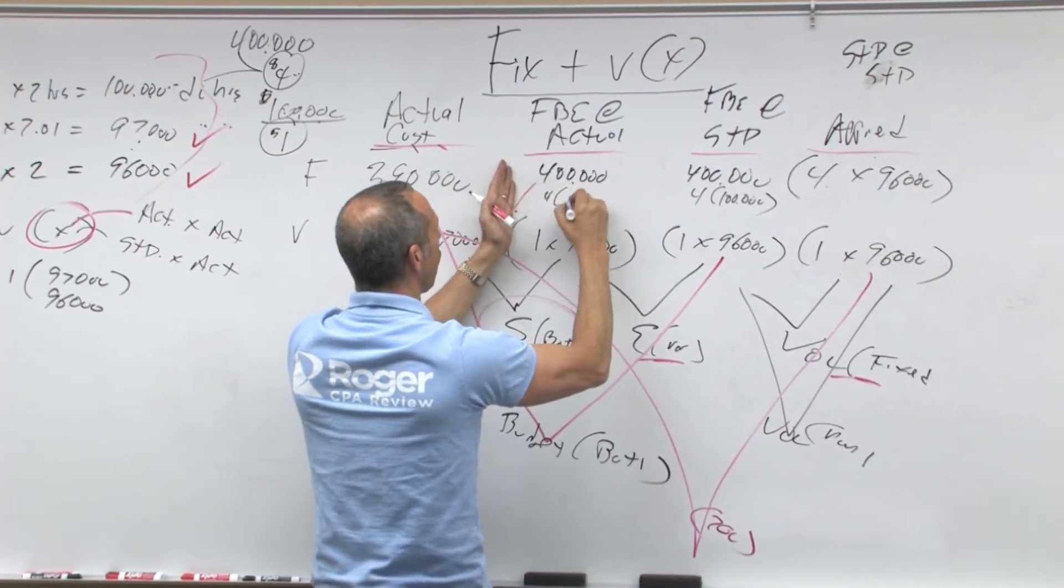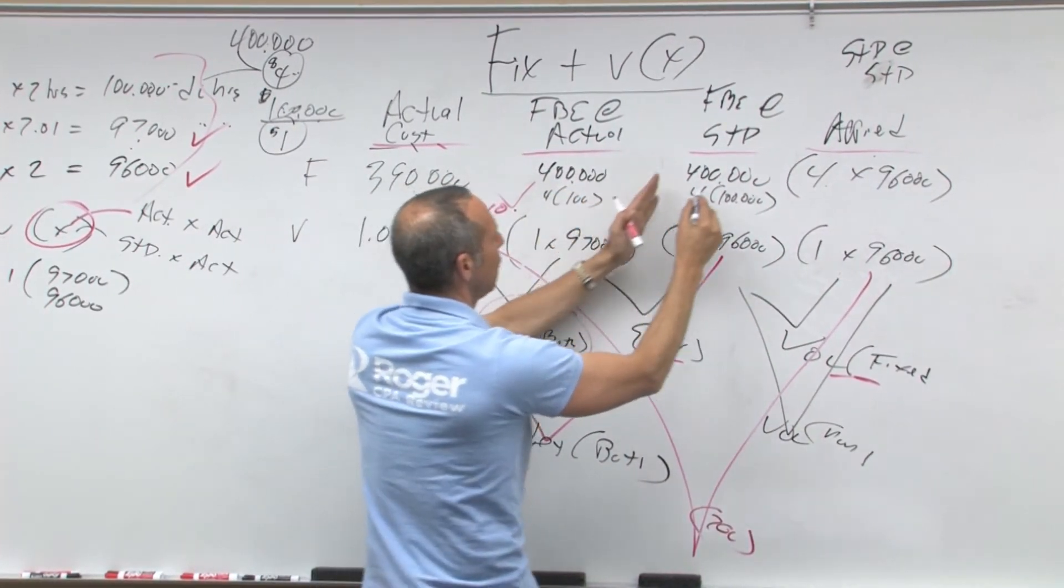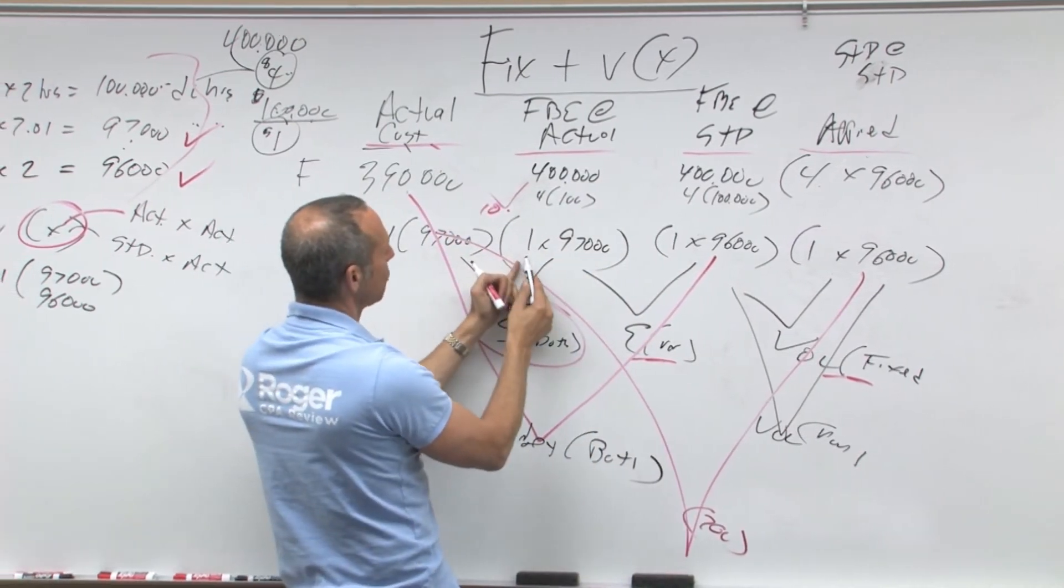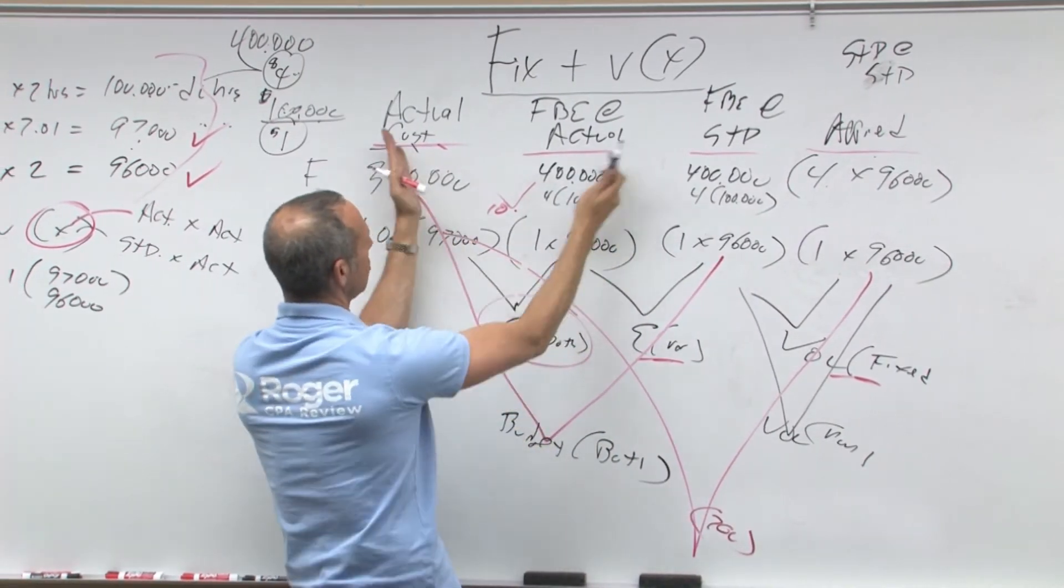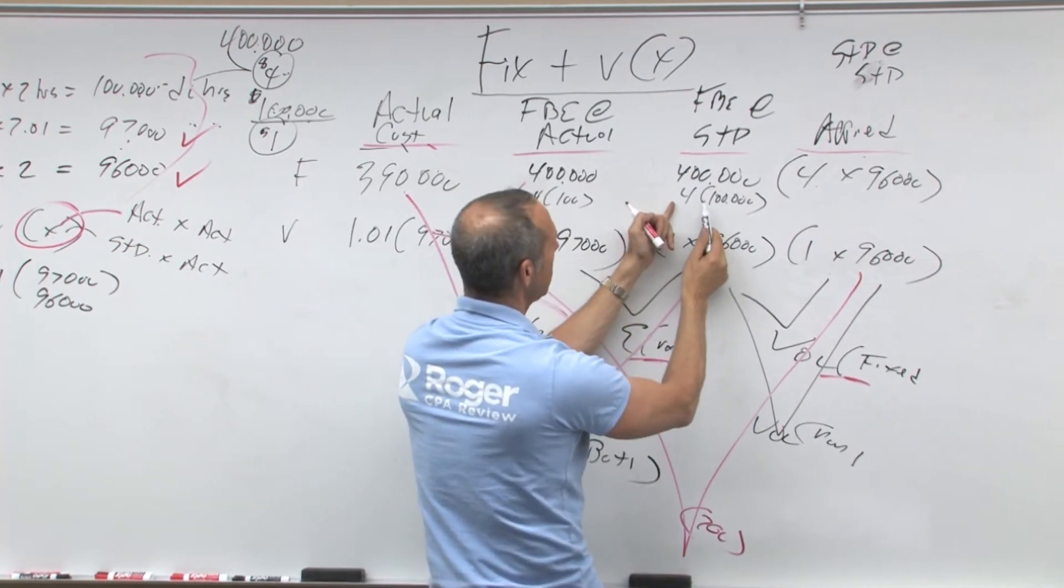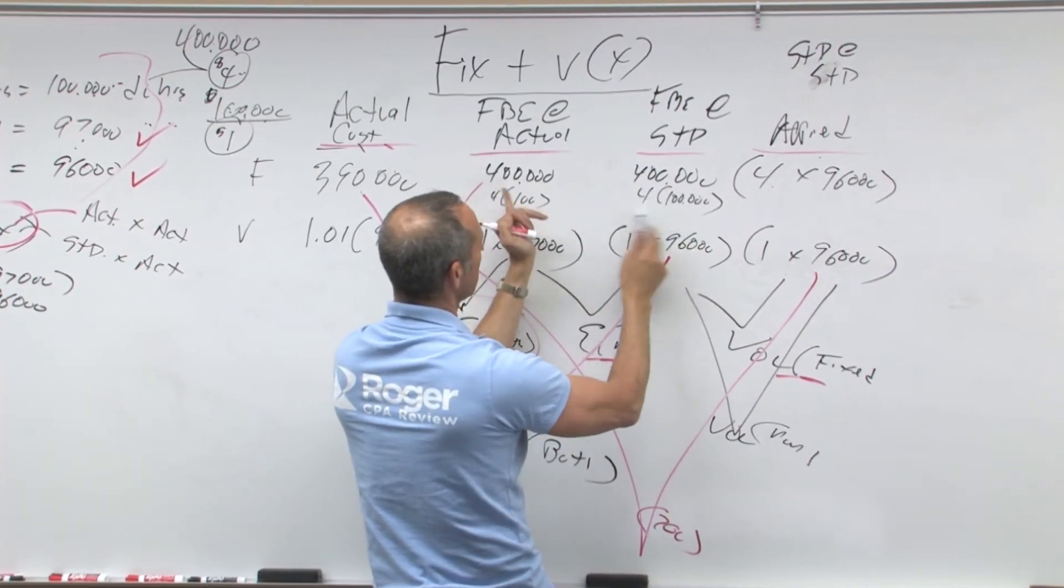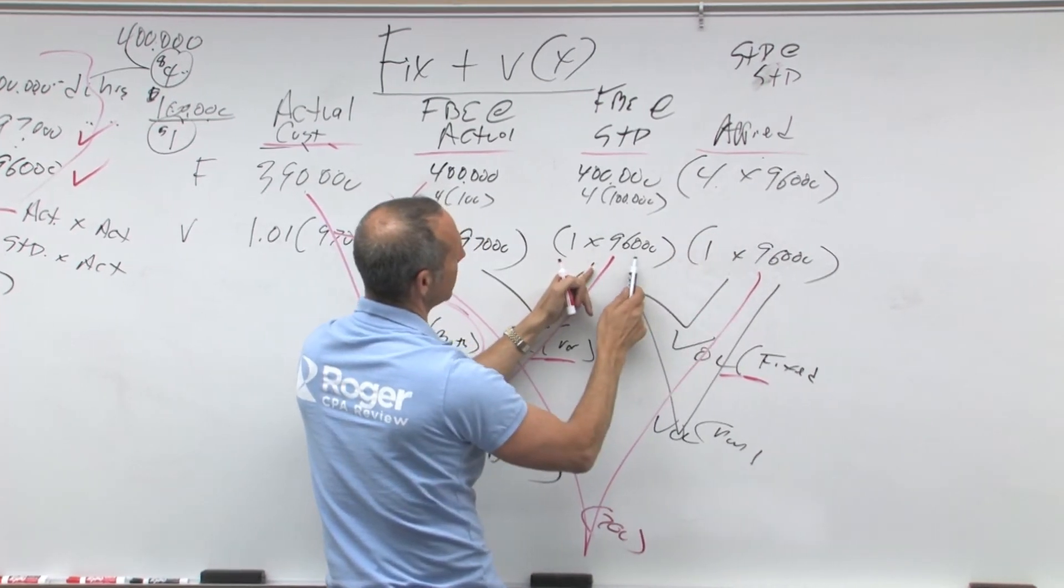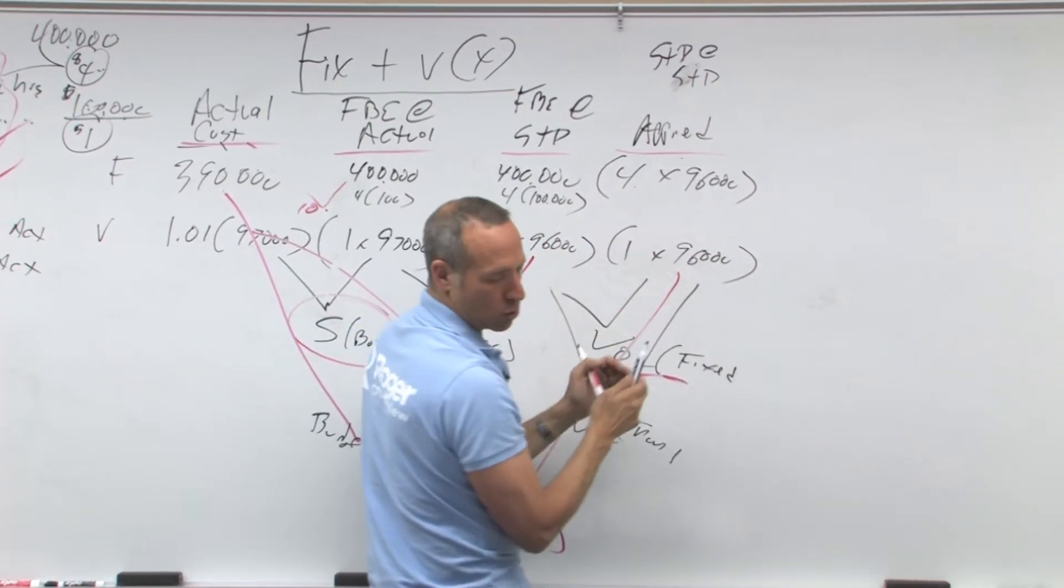So if you look at this, this is really four at 100, this is four at 100. This over here was a dollar at 97 because it's close to actual. This is 100,000 because that's within the flexible budget. This is applied, close to applied, 96, which is standard allowed for actual.